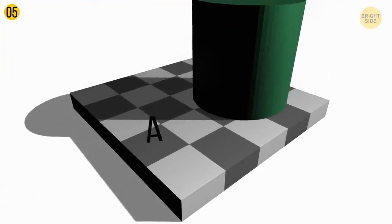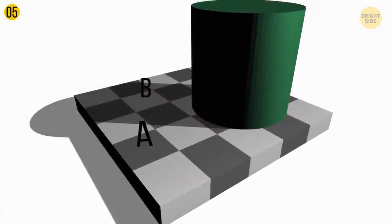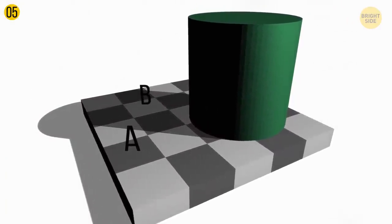Tile A on the checkerboard looks way darker than tile B. But if you look at the tiles independently, you can make sure they're actually exactly the same color.